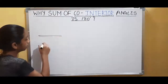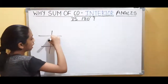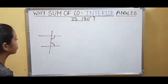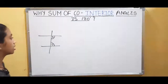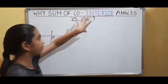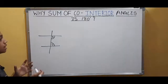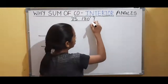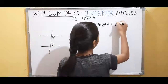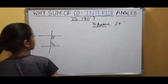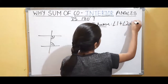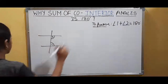Now we will prove why the sum of co-interior angles is 180 degrees. Again, the diagram shows parallel lines and a transversal. These two angles are co-interior angles. Let's name these angles as angle 1 and angle 2. We have to prove that angle 1 plus angle 2 is equal to 180 degrees.